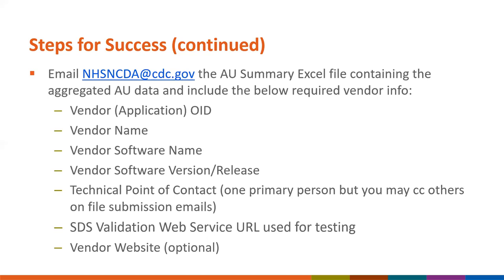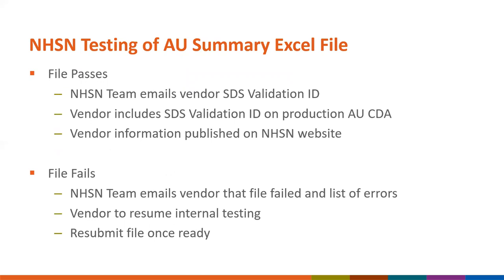If we've received the required information, we will test your Excel file to confirm it passes AU SDS validation. If the Excel file passes, an email will be sent containing the SDS validation ID to be added to your production AU CDA files, and the vendor name, software name, and software version will be published to our public-facing webpage. If the Excel file fails, an email will be sent indicating the file failed and listing the errors received. You can then resume testing internally, uploading your AU summary Excel file to the NHSN web service tool as many times as needed until no more errors occur, then resubmit to us.